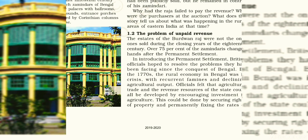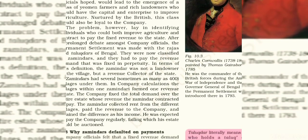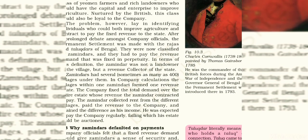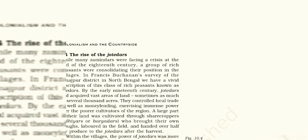The reason zamindars defaulted was that the initial revenue demand fixed by the Company was very high under the Permanent Settlement. As a result of the Permanent Settlement, a new class rose — the Jotedars. Some Jotedars possessed as much as several thousand acres of land. Unlike zamindars, the Jotedars' connection was directly with the peasants, and they lived within the villages, holding considerable influence.